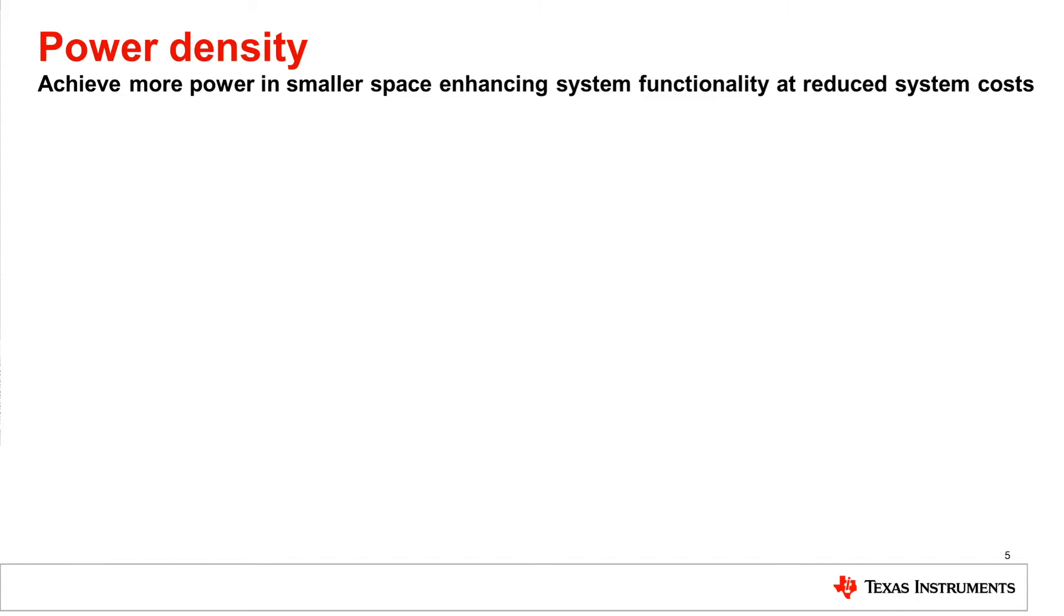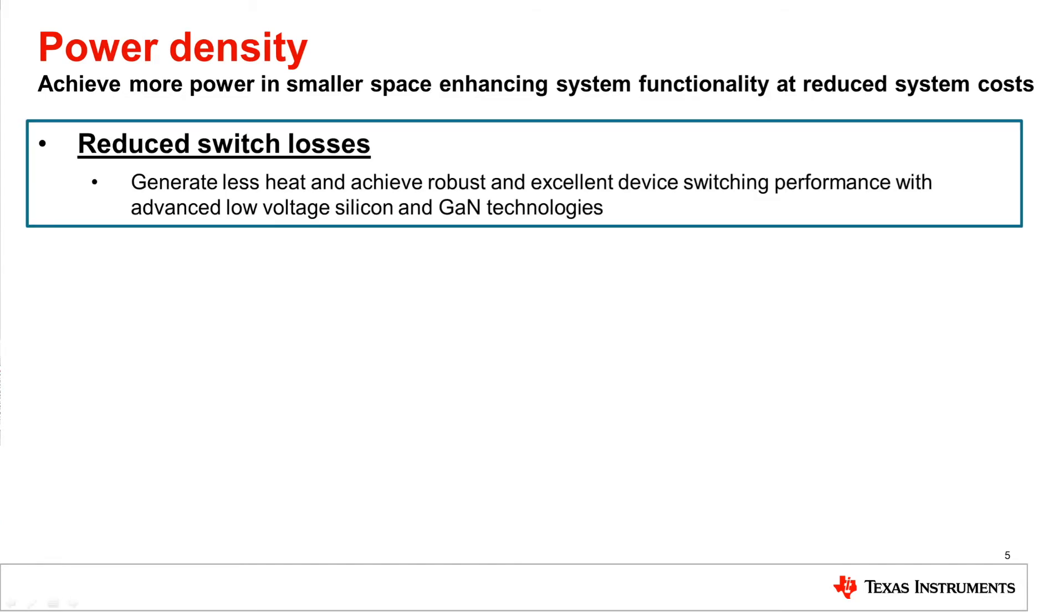Efficiency is considered the gatekeeper of achieving high power density because it is imperative to reducing the amount of heat that needs to be managed and removed from a device. To take advantage of the higher efficiency, the solution's volume, or its size in other words, must be shrunk. Achieving both feats at the same time requires a solution that can work efficiently at high operating frequencies. In particular, we need a switching element that can provide low conduction and low switching losses. We will discuss this aspect and TI's industry-leading technologies in the Reduce Switch Losses video in this series.